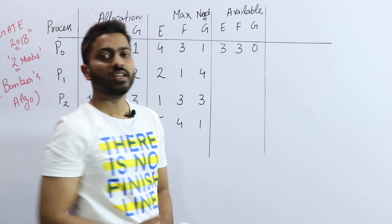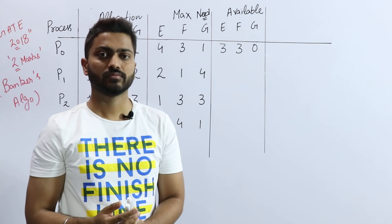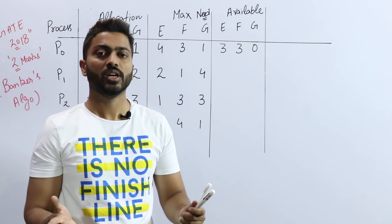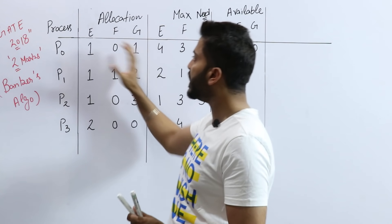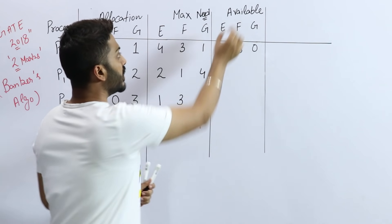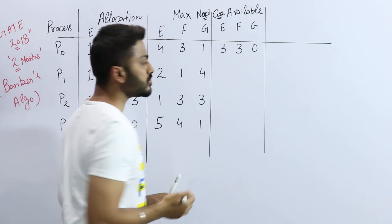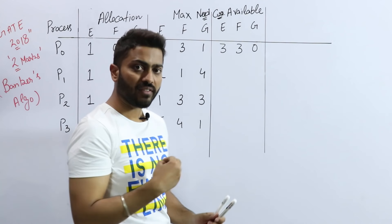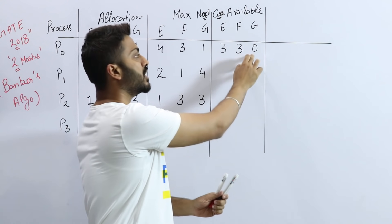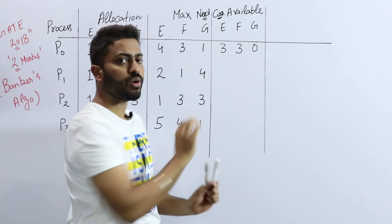The third piece of information given is the available resources. Available means the current availability in the system. Some resources are already allocated to processes, and what remains is the current availability. At present, the system has 3 units of E, 3 units of F, and 0 units of G available.